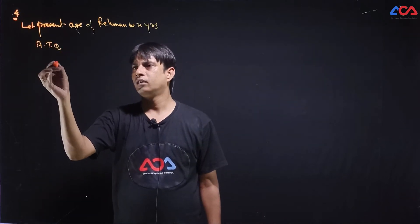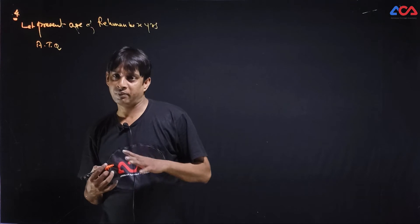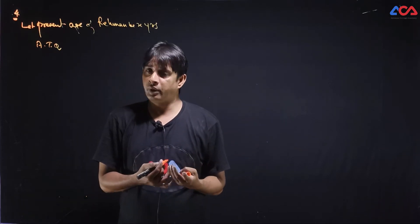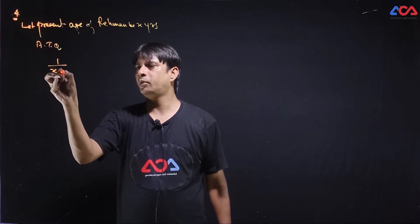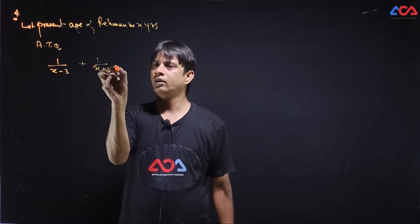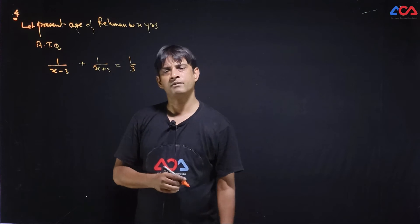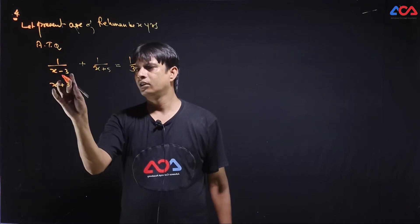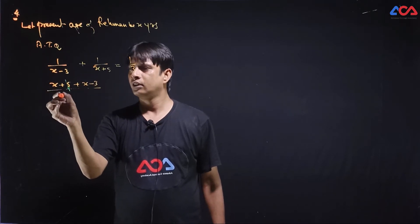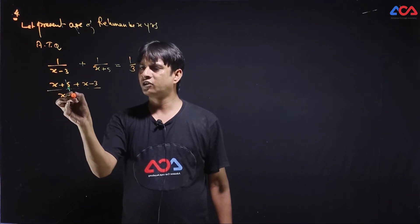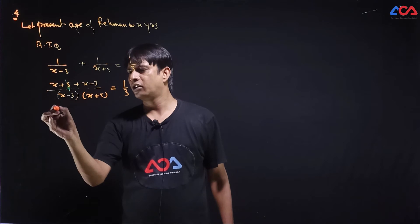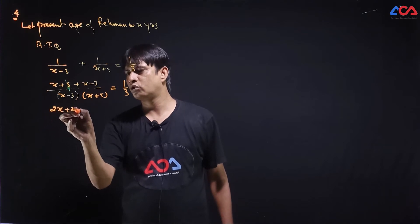Let present age of Rehan be x years. Then 3 years ago, x minus 3. And 5 years from now, x plus 5. So 1 upon x minus 3 plus 1 upon x plus 5 is equal to 1 upon 3. Cross multiply. x plus 5 plus x minus 3 upon x minus 3 x plus 5 which is equal to 1 by 3. Here we get 2x plus 2 upon